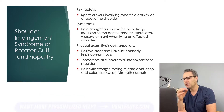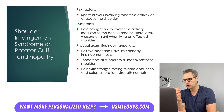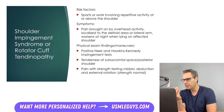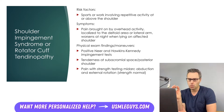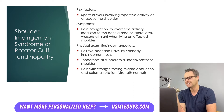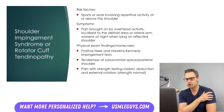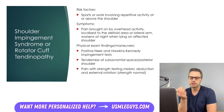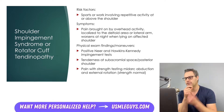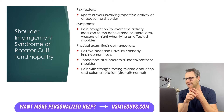On physical exam, the patient will have tenderness at the subacromial space or posterior aspect of the shoulder, and tenderness when that area is palpated is usually positive. When assessing strength with abduction and external rotation against resistance, strength will be intact, but halfway through that motion the patient will report pain.